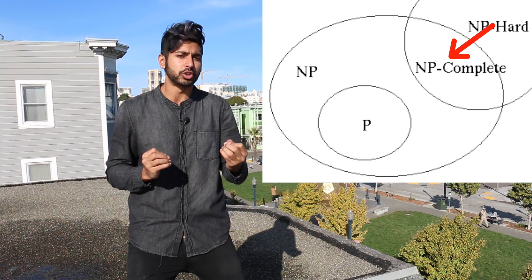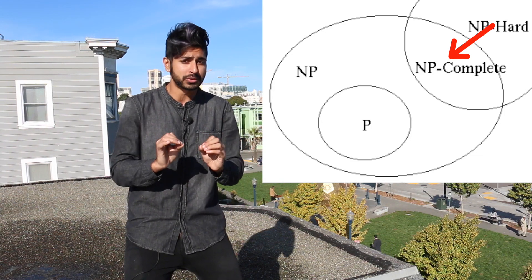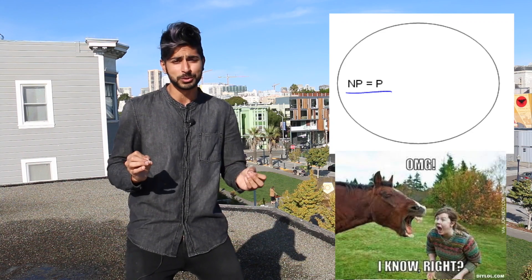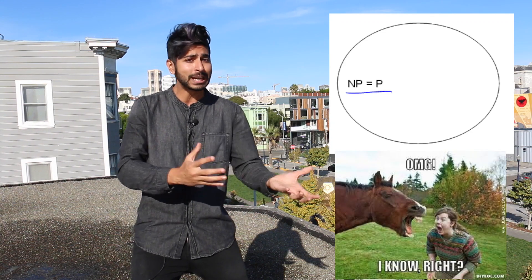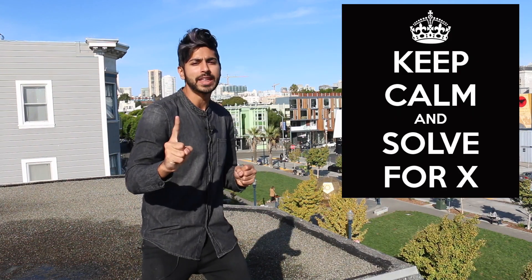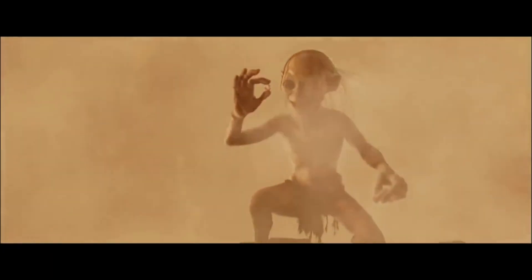If we were to find a strategy to solve any NP-complete problem in reasonable time, then we could use that same strategy to solve any NP problem in reasonable time. It would prove that P equals NP, meaning there would be a single strategy that could solve any problem — one algorithm to rule them all. Proving P equals NP is the million dollar question.